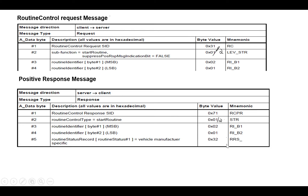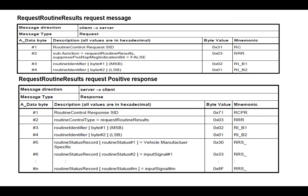As a response you may also have a vehicle manufacturer specific status record, for example 32. For requesting results, the sub-function is 03, so the request is 31 followed by 03 followed by routine ID 02 01. The response would be 71 followed by 03 followed by routine ID 02 01, and then the routine status records, which contain the output values configured for that routine.